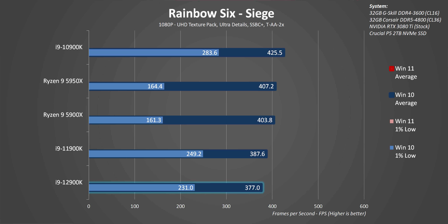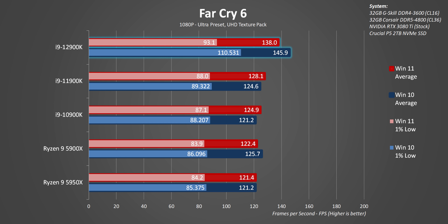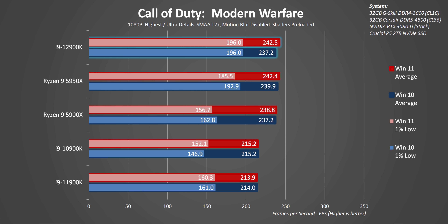Moving on to Rainbow Six, there are two things to call out. Under Windows 10, the 12900K seems to be underperforming while the 10900K excels. Also, regardless of OS, AMD's 1% lows are all over the place — we troubleshot it for a while. Intel's flagship does dominate every now and then, like in Far Cry 6, but even there Windows 11 still handicaps the performance of the chip. When you launch a new architecture with a new OS, there are bound to be some problems, and this is certainly one of those cases.